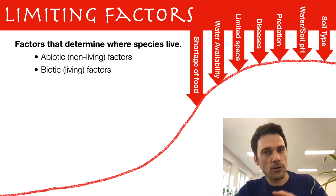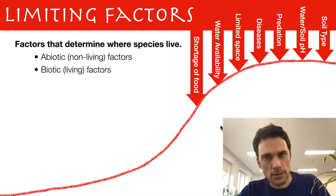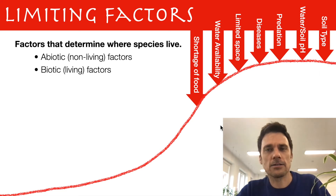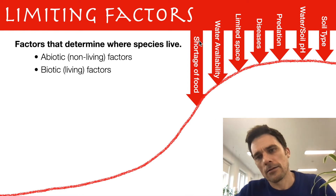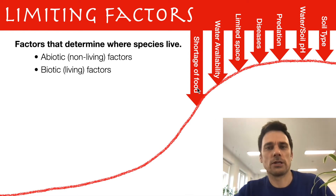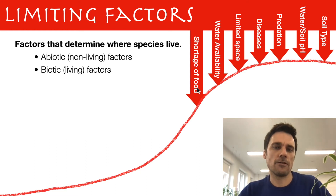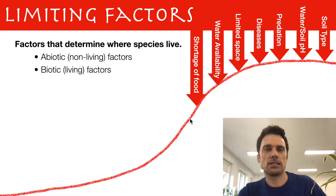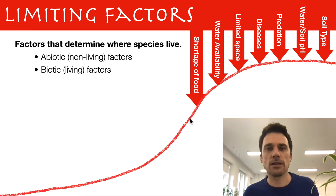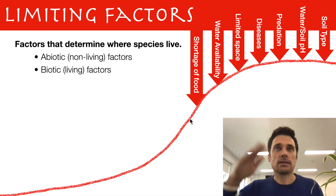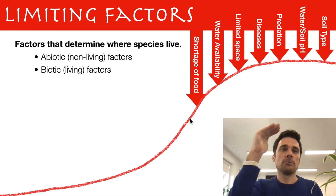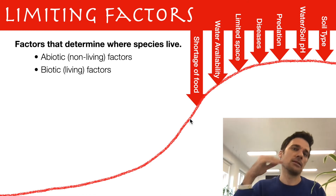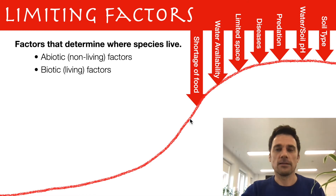What are those arrows that are pushing it down? Those are the limiting factors. There can be all kinds of things, such as food shortages. There's not enough food for an animal whose population is exploding — they're competing, eating everything, and there's not a lot of food out there anymore. That's going to limit the growth of the population. That's a limiting factor.